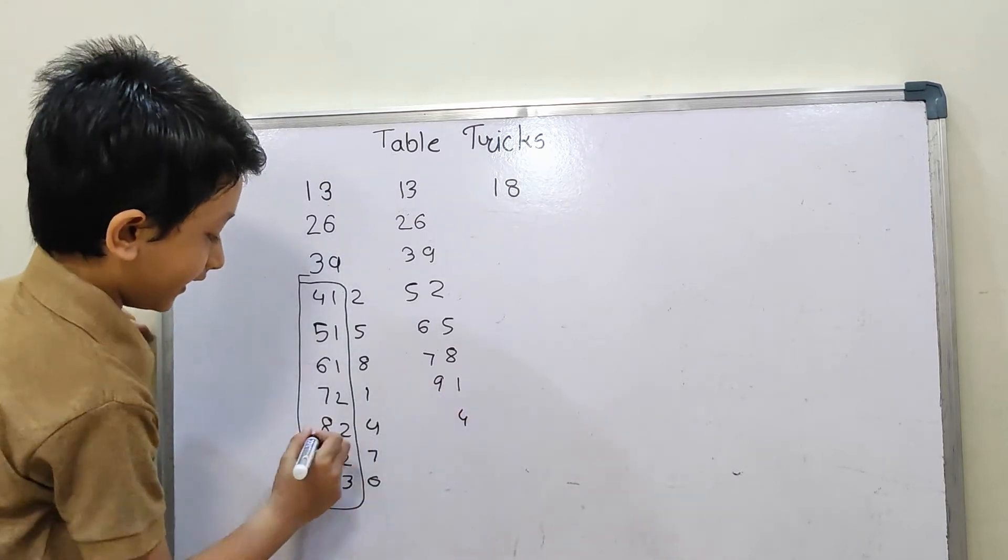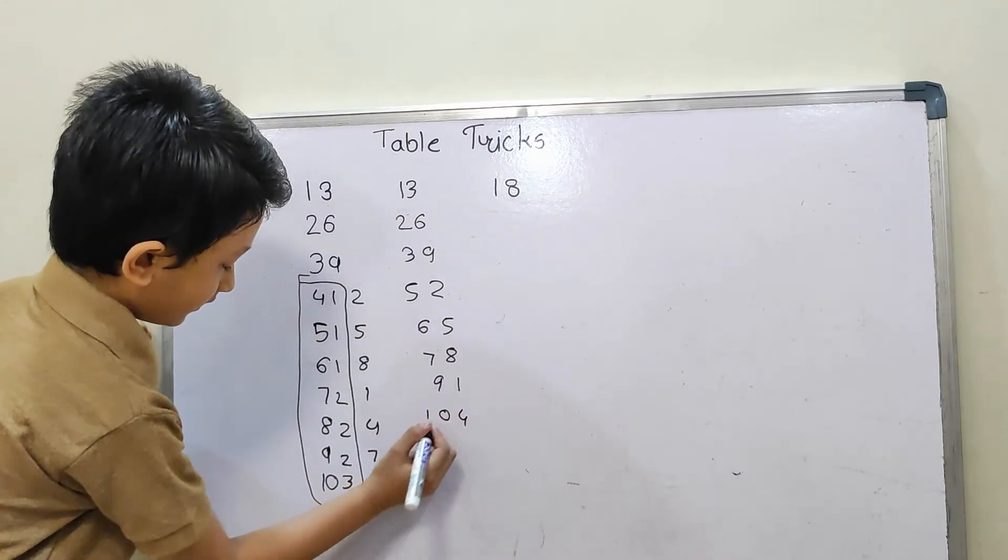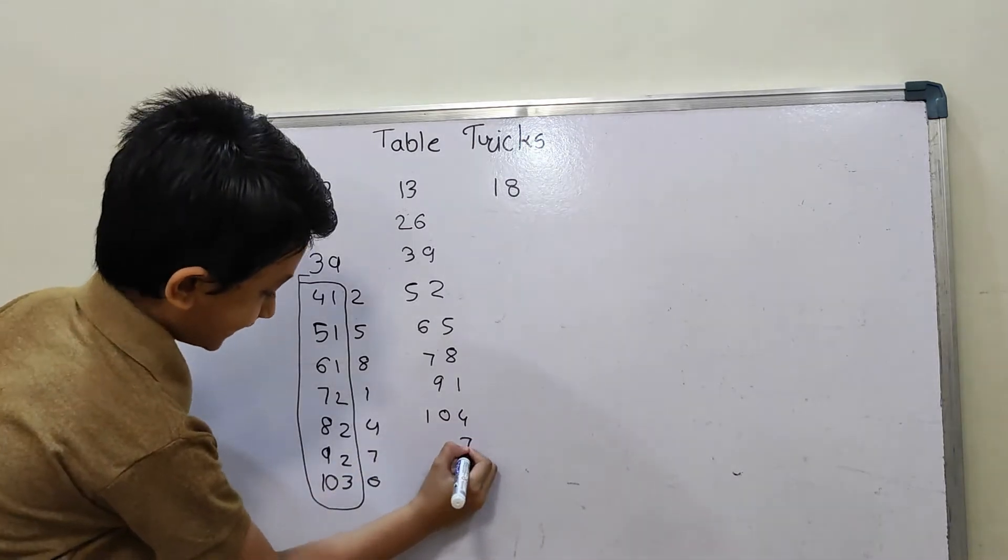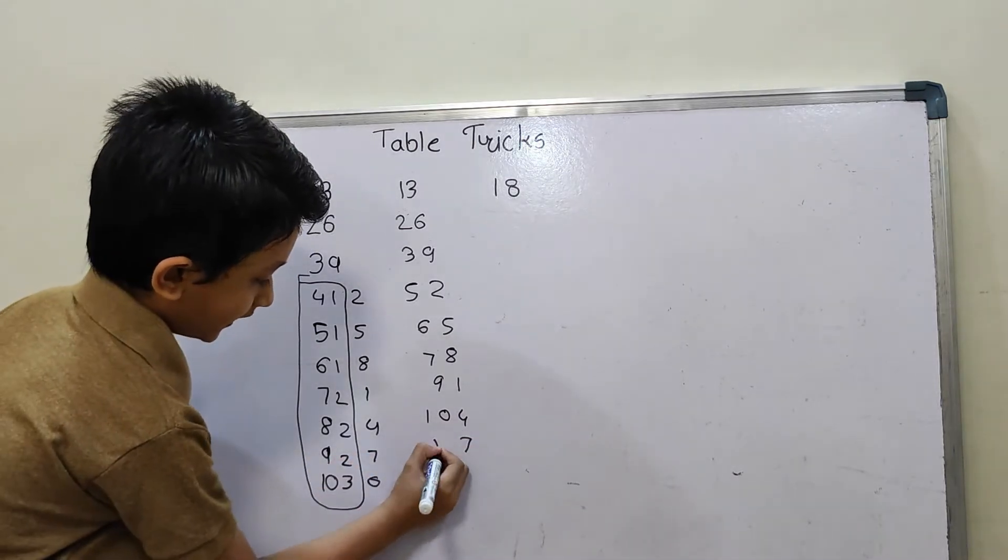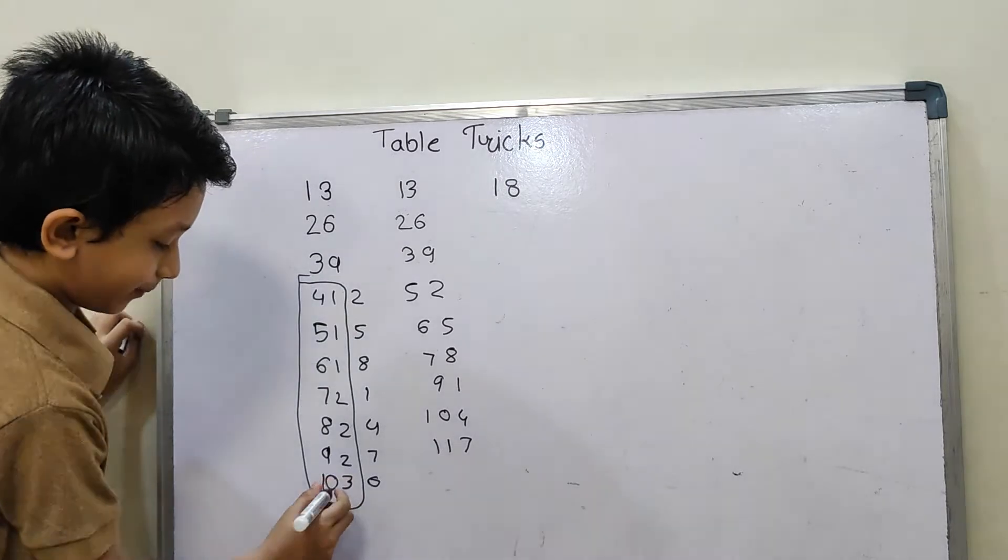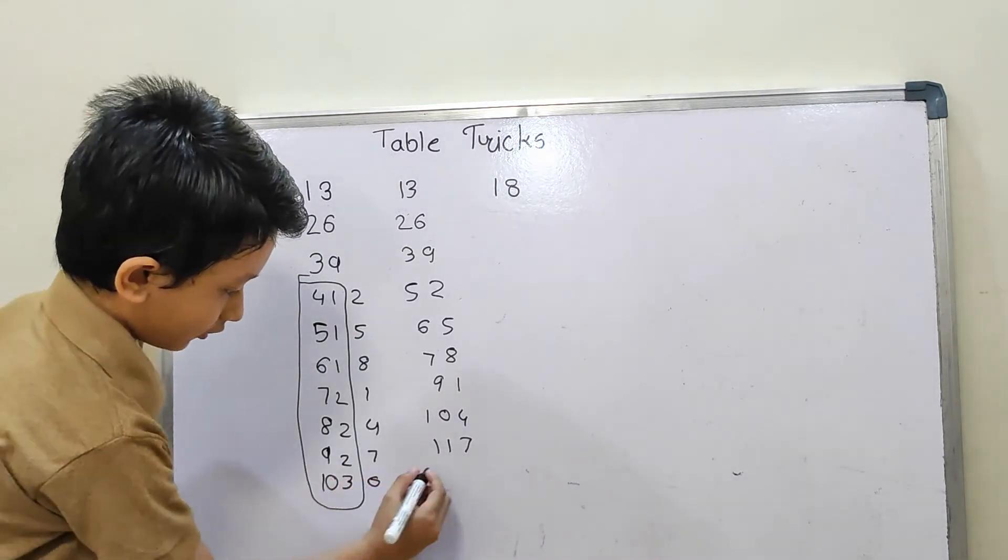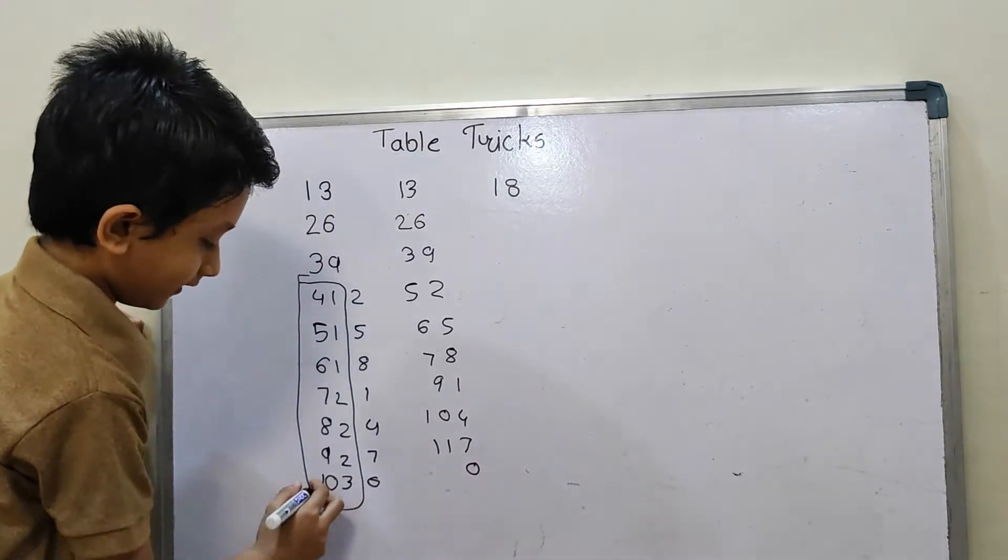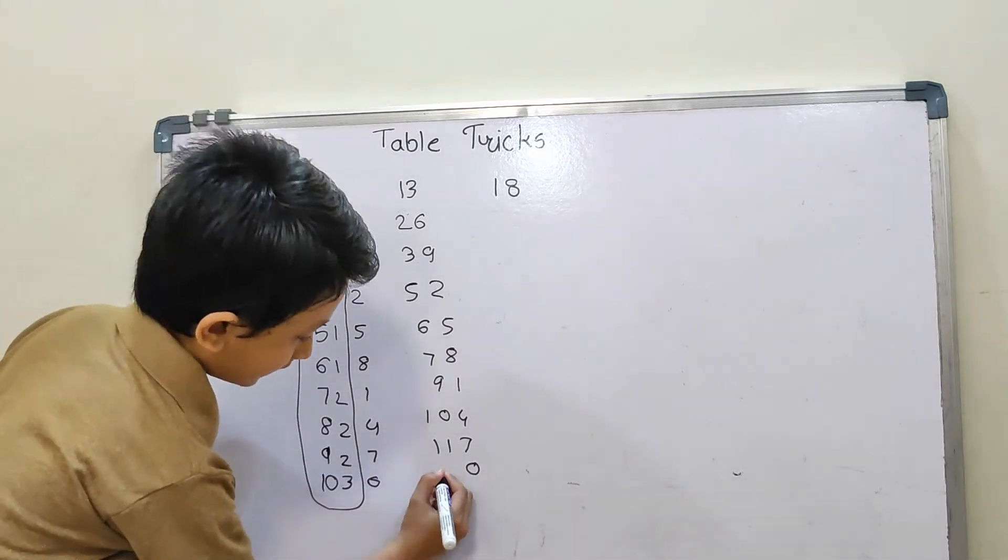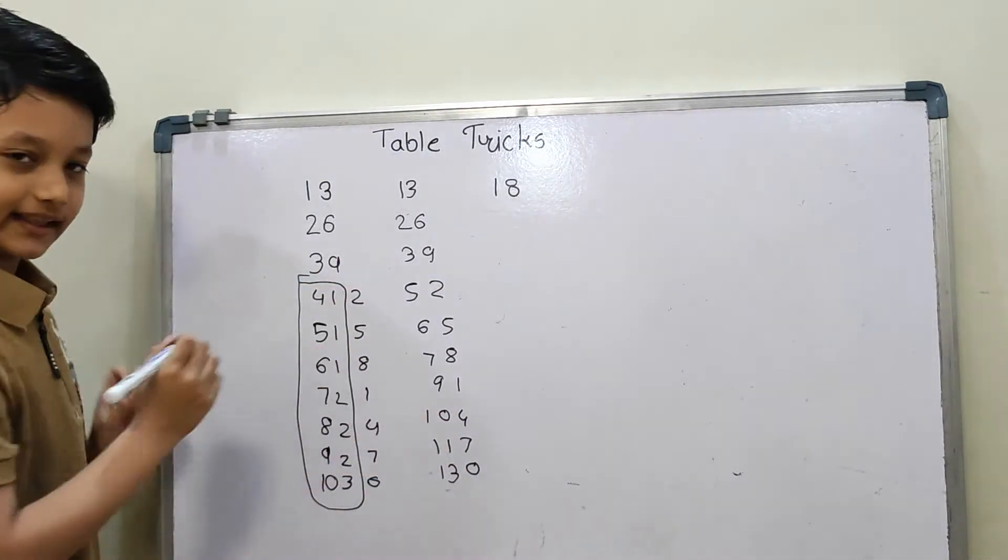Then 4 as it is, 8 plus 2 equals 10, and then 7 as it is, 9 plus 2 equals 11. Then 0 as it is, and then 10 plus 3 equals 13.